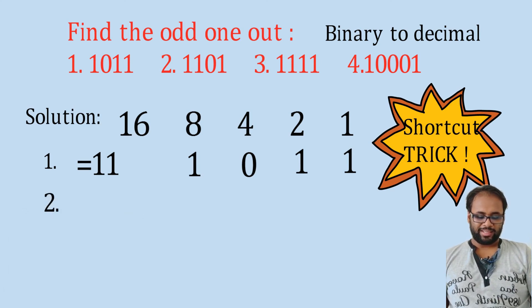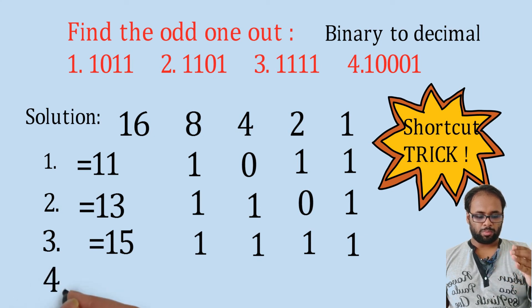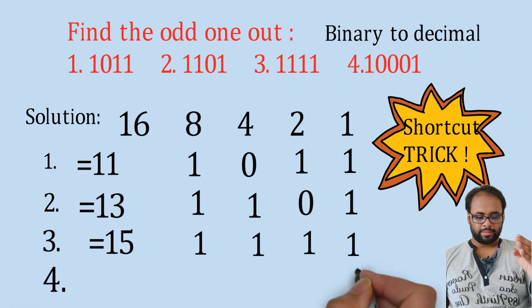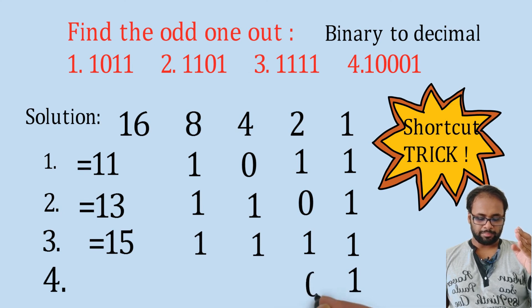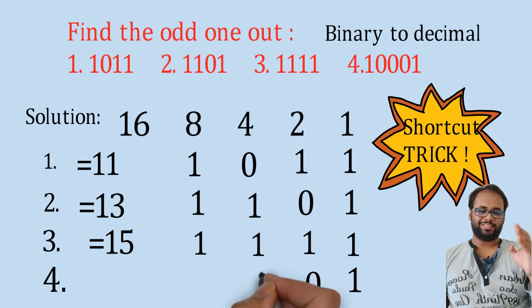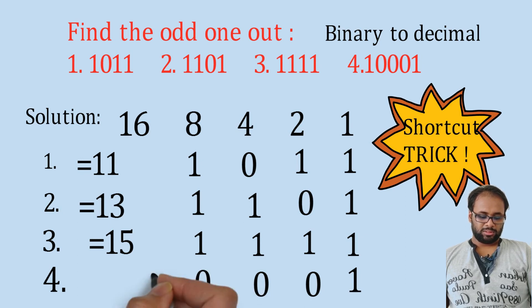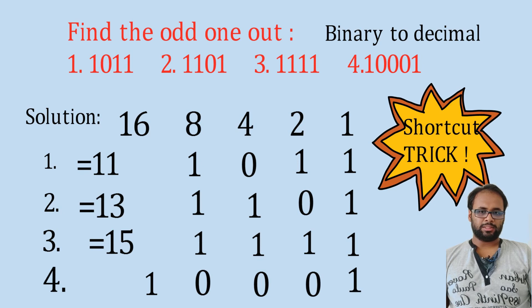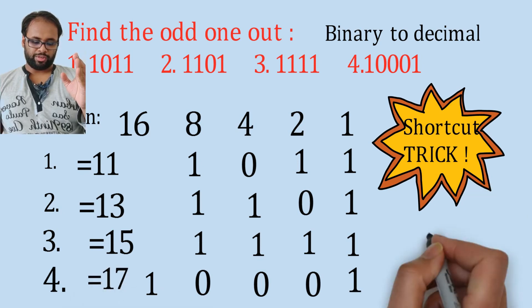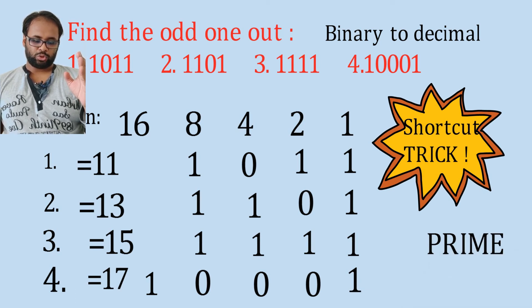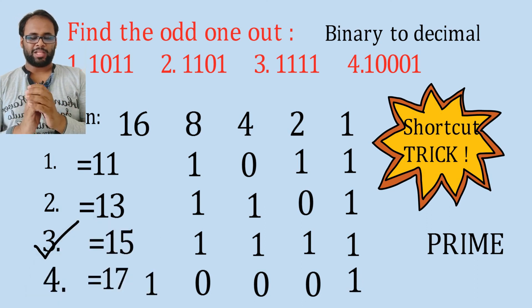Next we see the next number from right to left: if we write it, it becomes 1101, so in that case 8 plus 4 plus 1 equals 13. Similarly for 1111, it is 8 plus 4 plus 2 plus 1 equals 15. Next is 10001, which becomes 16 plus 1 equals 17. If you see, the rest of the numbers are actually prime: 11, 13, and 17, except 15. 15 is not a prime number, so the answer is the third option. That's the odd one out.